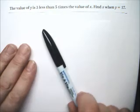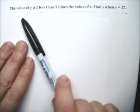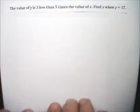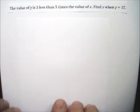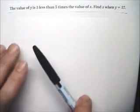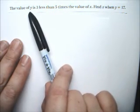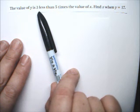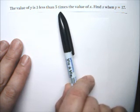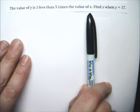Well, you have to form a plan, and you have to read it over and break it apart into little parts. I see three parts here. I see y, I see 3 less, and I see 5 times the value of x.